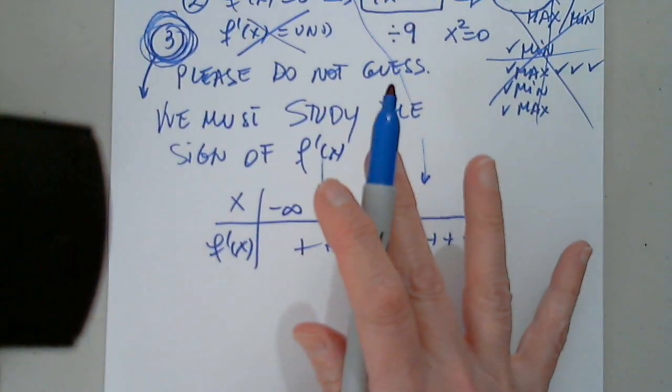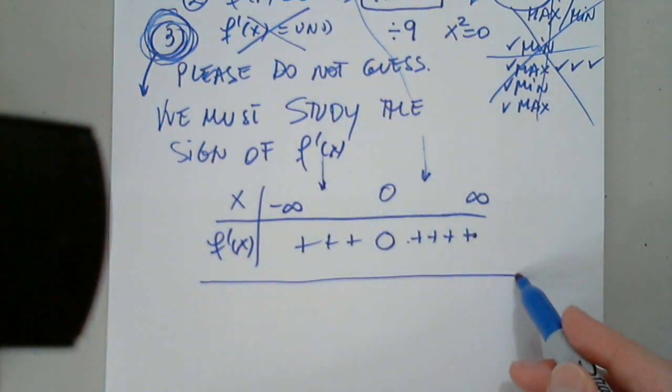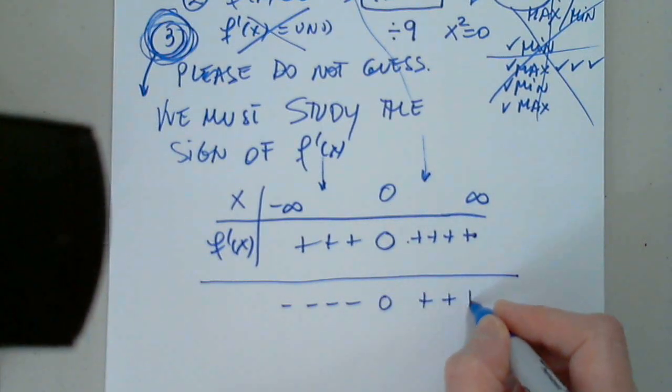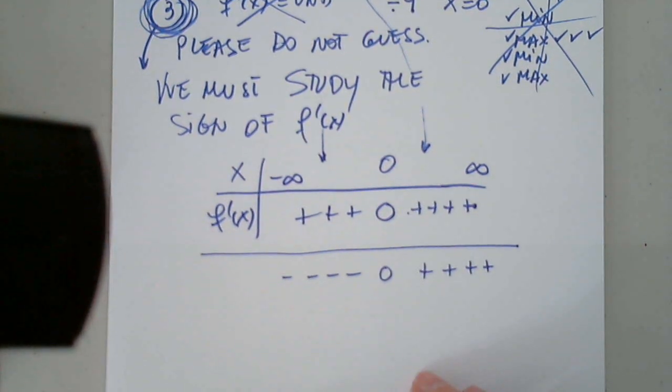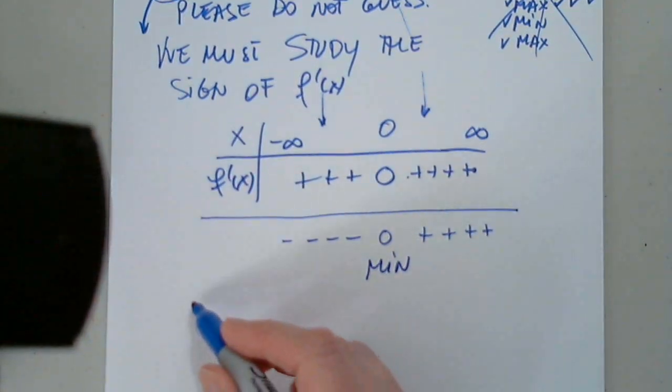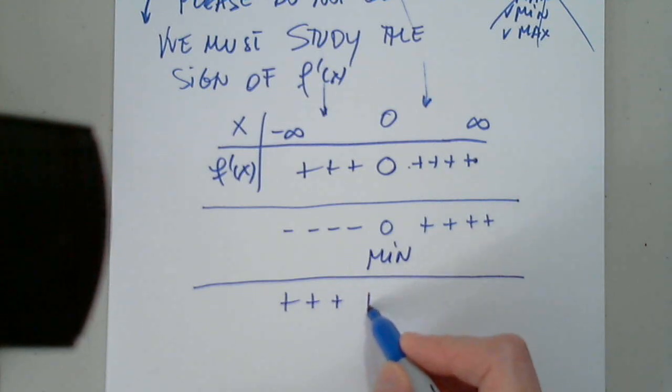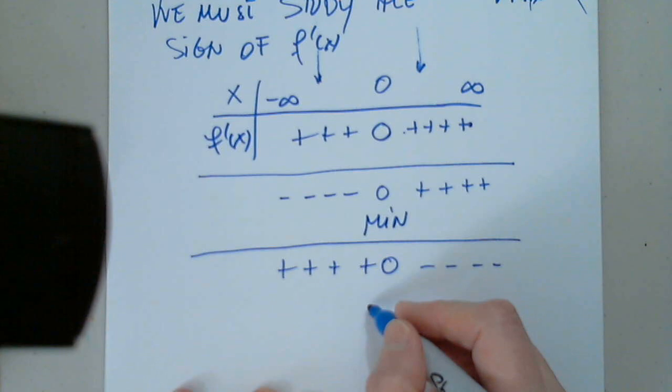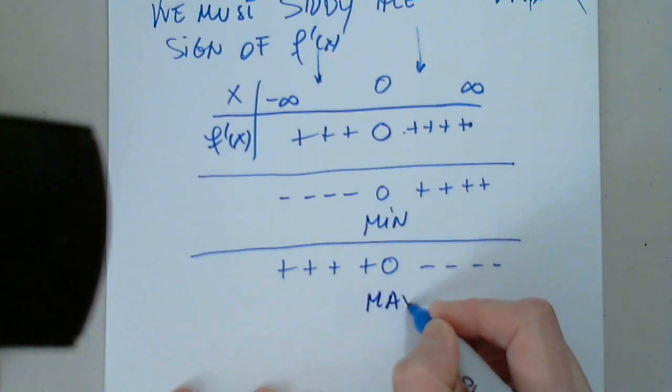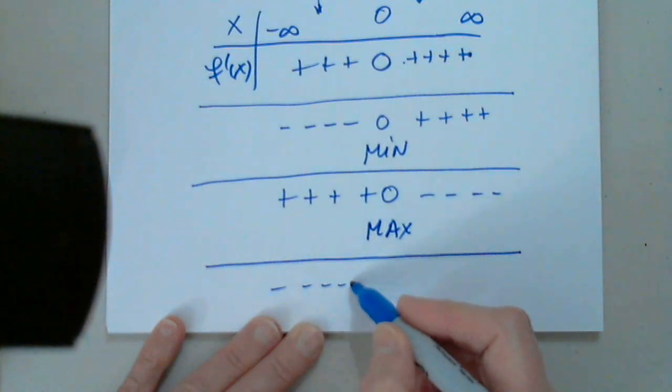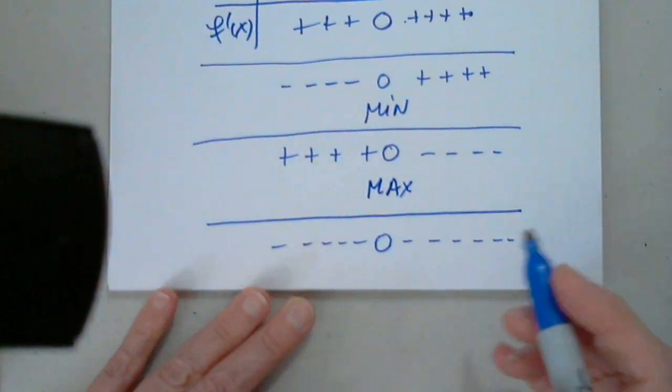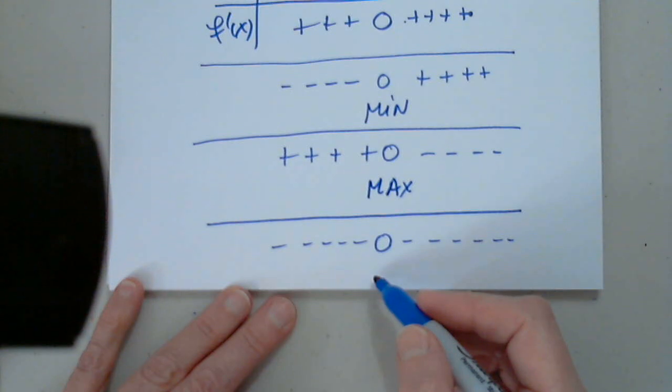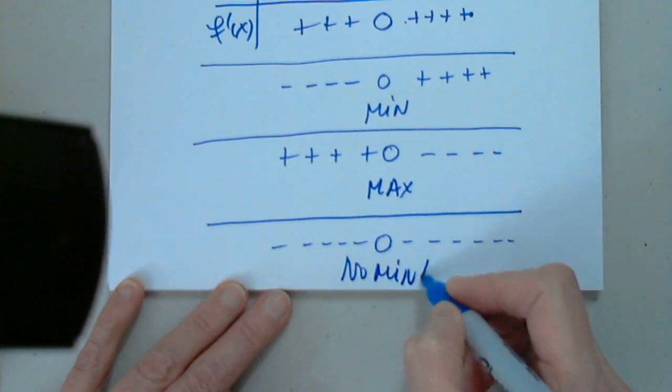What if, so this is a different question. Okay. What if the sign would have been this? What would you have said? That this is our relative minimum? Yes. What, a different question. What if the sign would have been this? What would you have said? It's max. Yes. What if the sign would have been this? What would you have said? That this is no minimum or no max. No min, no max.